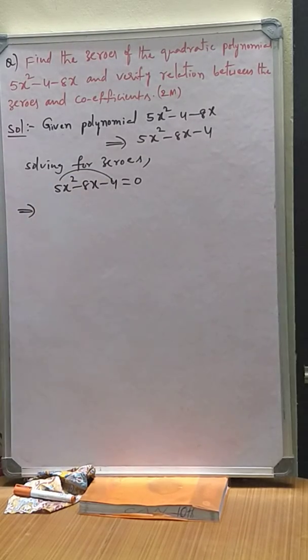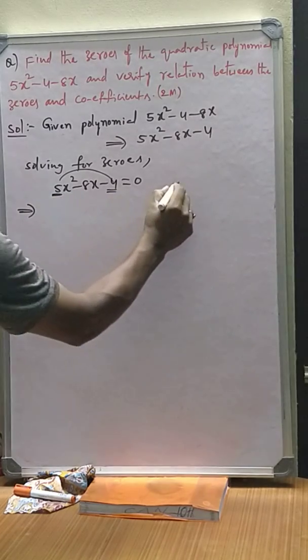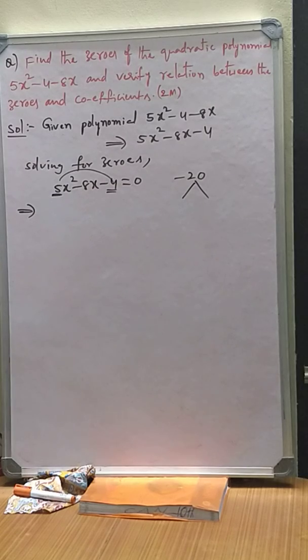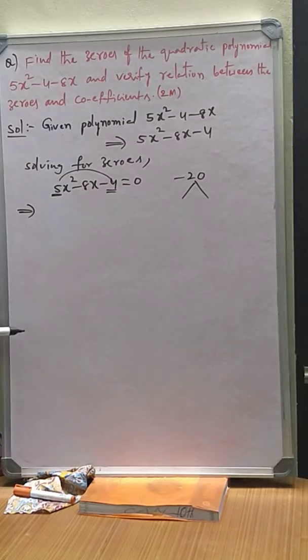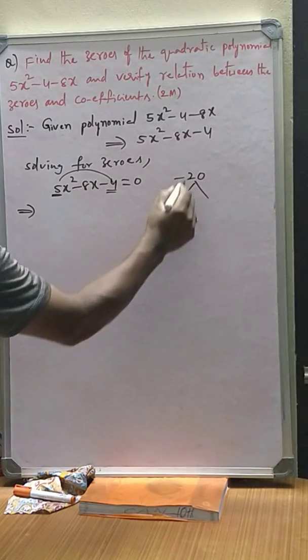Then the product of coefficient of x² and constant is -20. -20 should be factorized so that the sum of the factors should be -8.